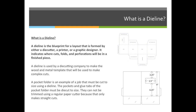What is a die line? A die line is a blueprint for a layout that is formed by either a die cutter, a printer, or a graphic designer. I want to emphasize that the person making the actual die will be the die cutter. But you as a graphic designer, printer, or die cutter can design the die line — just the lines representing where the metal will be placed. If you're a graphic designer, you need to check with the printer and the die cutter to see if they already have a die for what you're trying to cut.